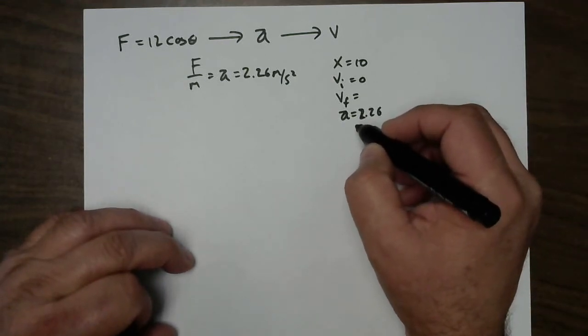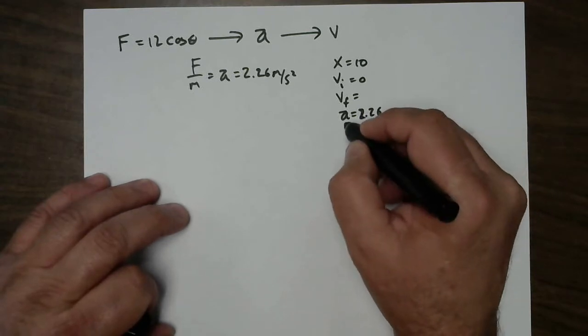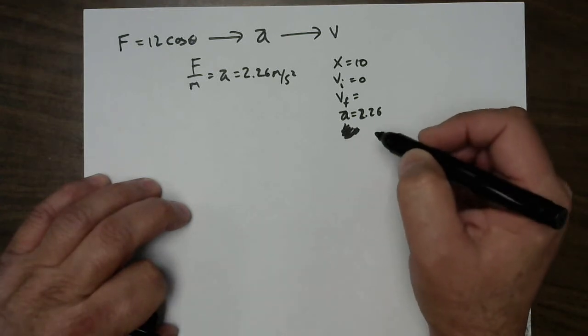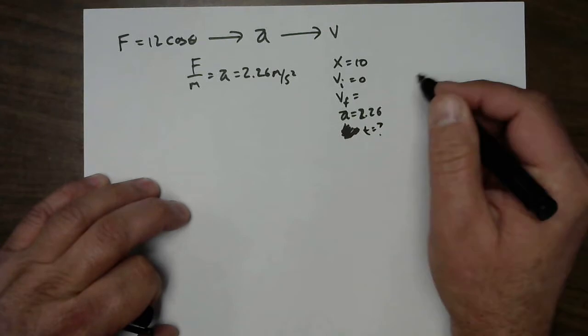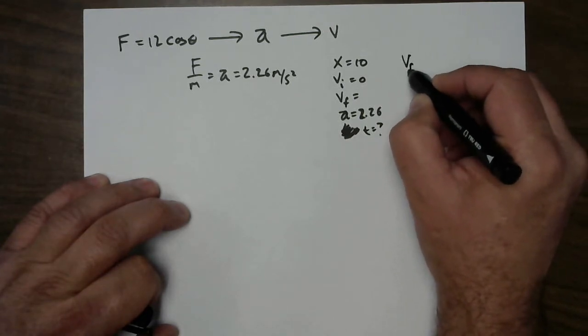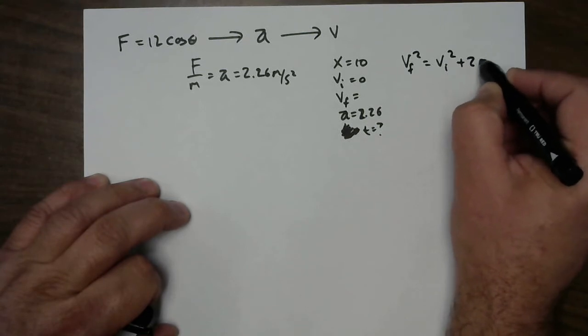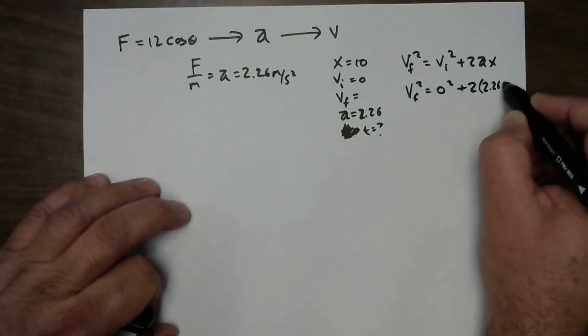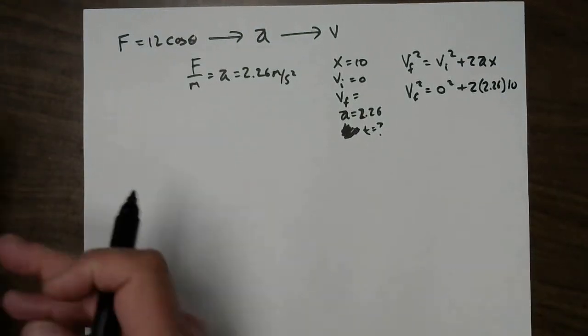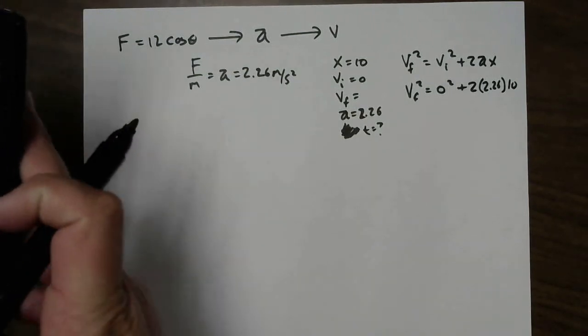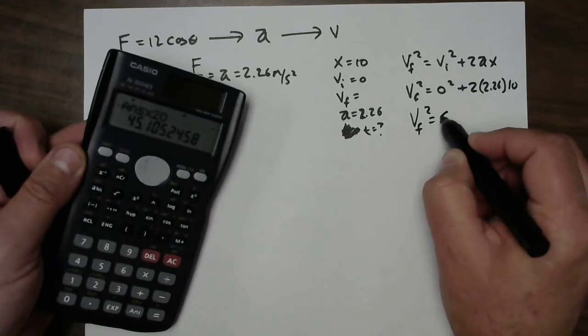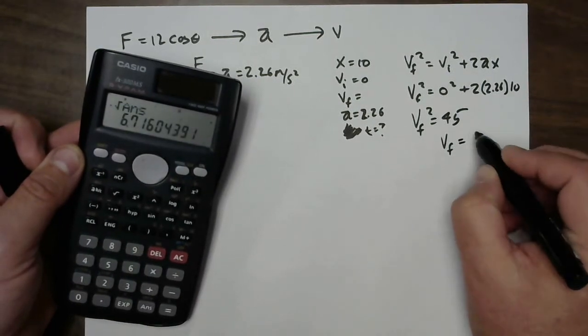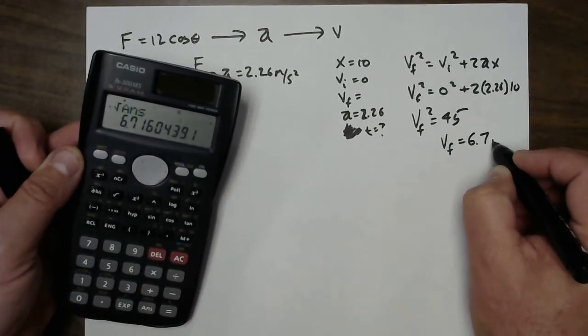Well, this is very interesting. We have a time. I said 10 seconds, didn't I? But that's not really going to be the time. That's interesting. I just made 10 seconds up on that last thing. So, we're going to have to use the no time equation. VF squared equals VI squared plus 2AX. VF squared is going to be 0 squared plus 2 times 2.26 times 10. So, we need to multiply our 2.26 by 20, and we're going to get a velocity squared of 45, and we're going to take the square root of that number, and we're going to get a velocity final of 6.7 meters per second.